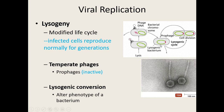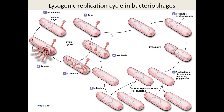The lysogenic cycle: you have attachment, entry, and then the DNA incorporates into the bacterial DNA. Those bacteria just reproduce normally — one bacterium with viral DNA becomes two, becomes four, and so on. At some point, something triggers the viral DNA to separate from the bacterial DNA and go back into the lytic cycle. That triggering process is called induction. Once induced, you have a whole bunch of cells all making viruses at once.